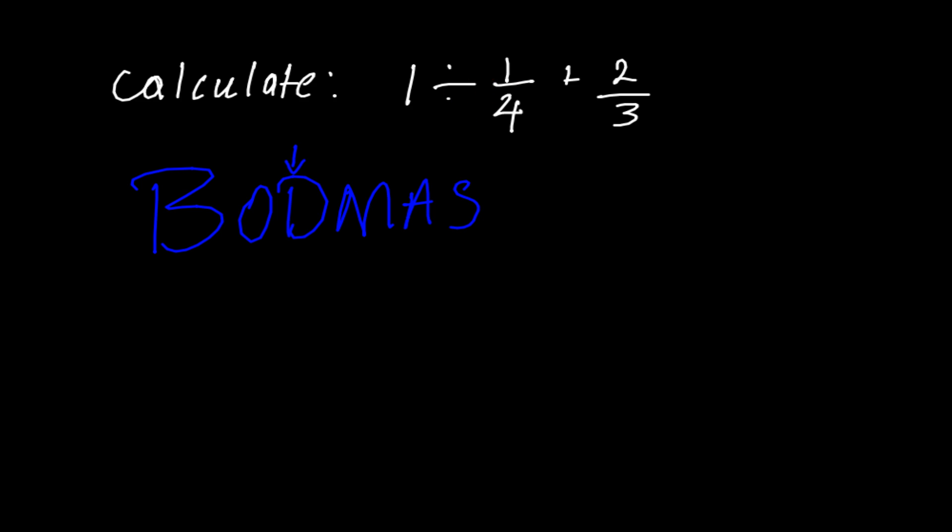Now let's divide first. We have 1 divided by 1 quarter plus 2 over 3. Now 1 divided by 1 quarter is the same as changing the division to multiplication, and then this one we change it to its reciprocal.